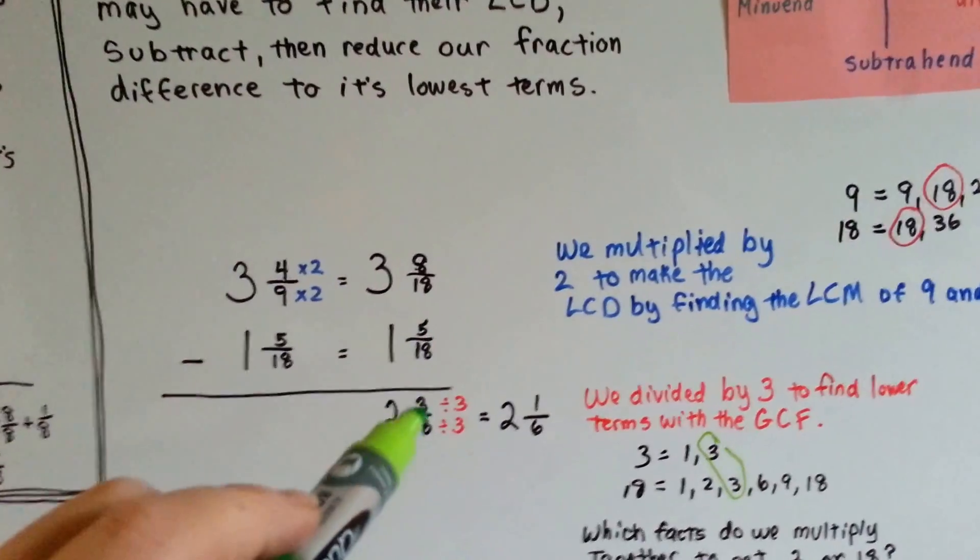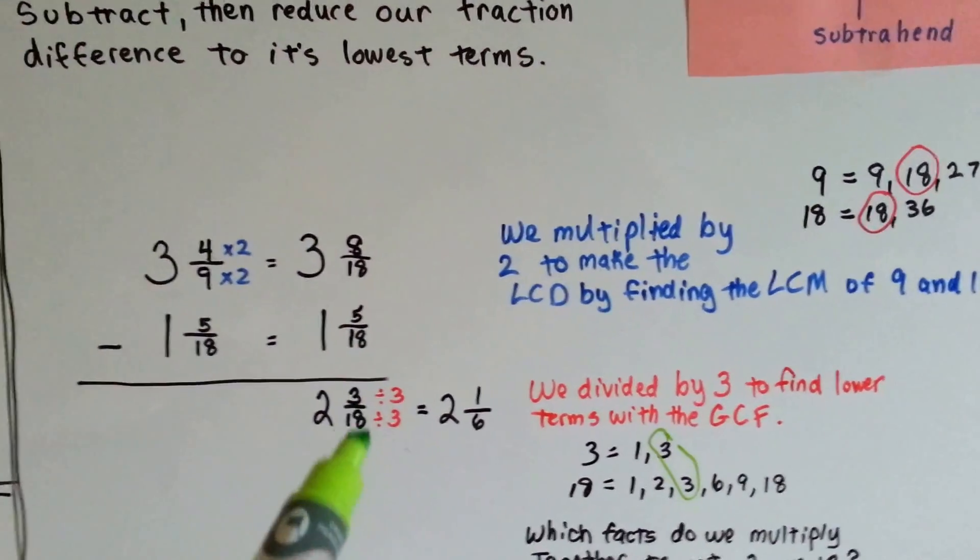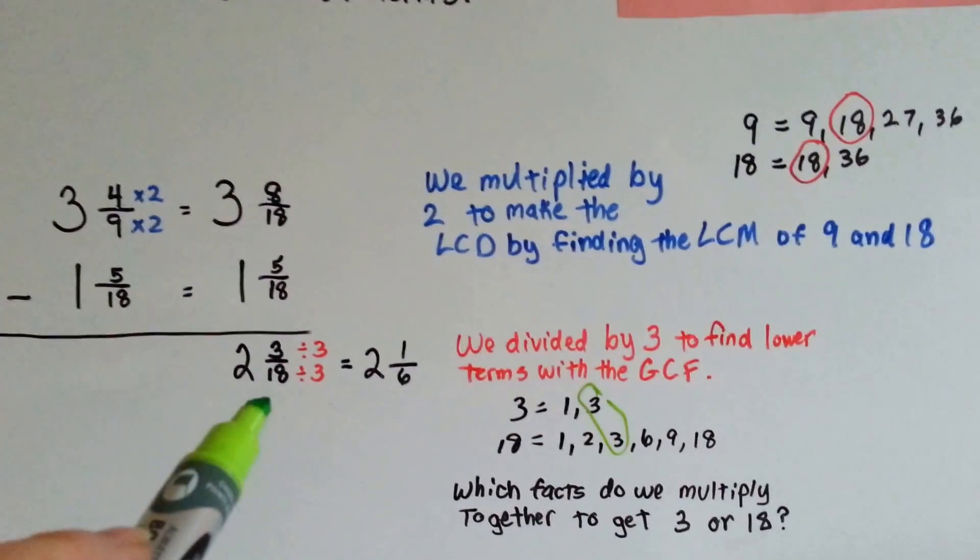The eight take away the five is three. Three take away one is two.